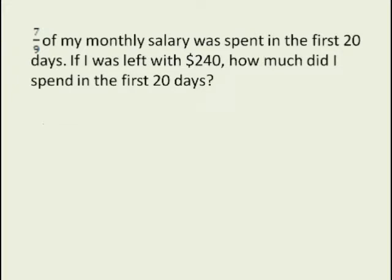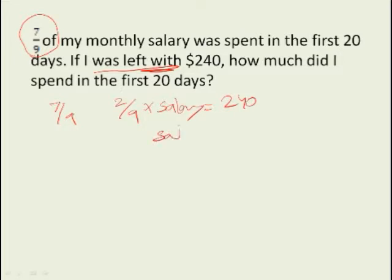Here's another one. If you look at this question, it's saying 7 by 9 of my monthly salary was spent in the first 20 days. If I was left with $240, again 'left with,' so it means if 7 by 9 is spent, what you are left with is 2 by 9. So there are two fractions, and this 2 by 9 of his salary equals 240.